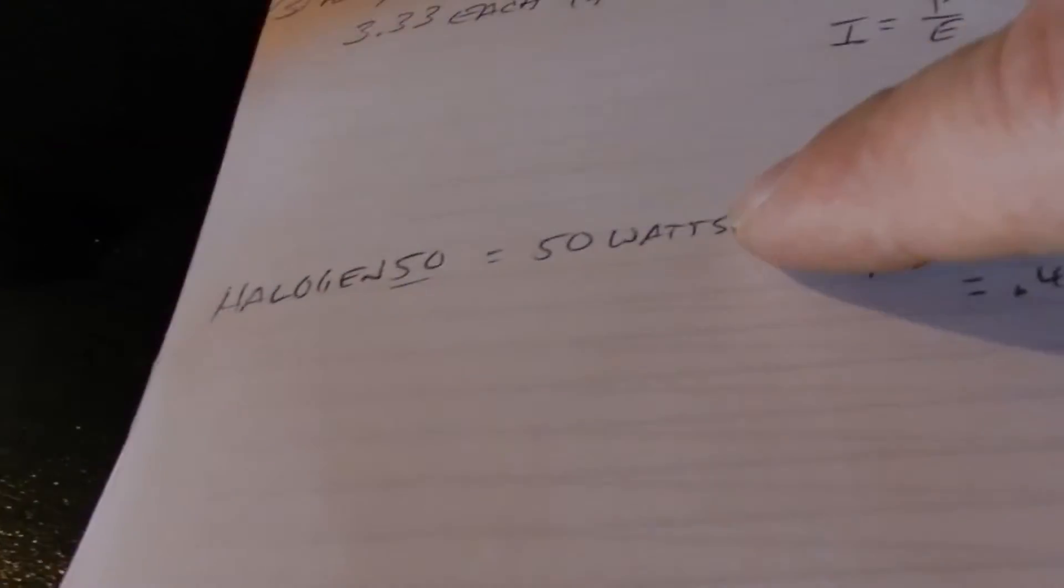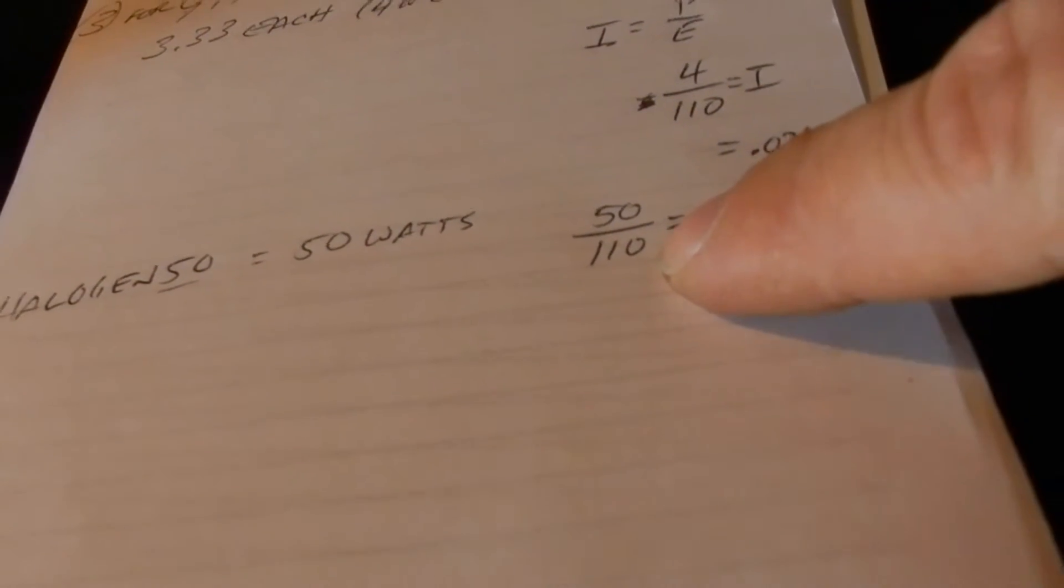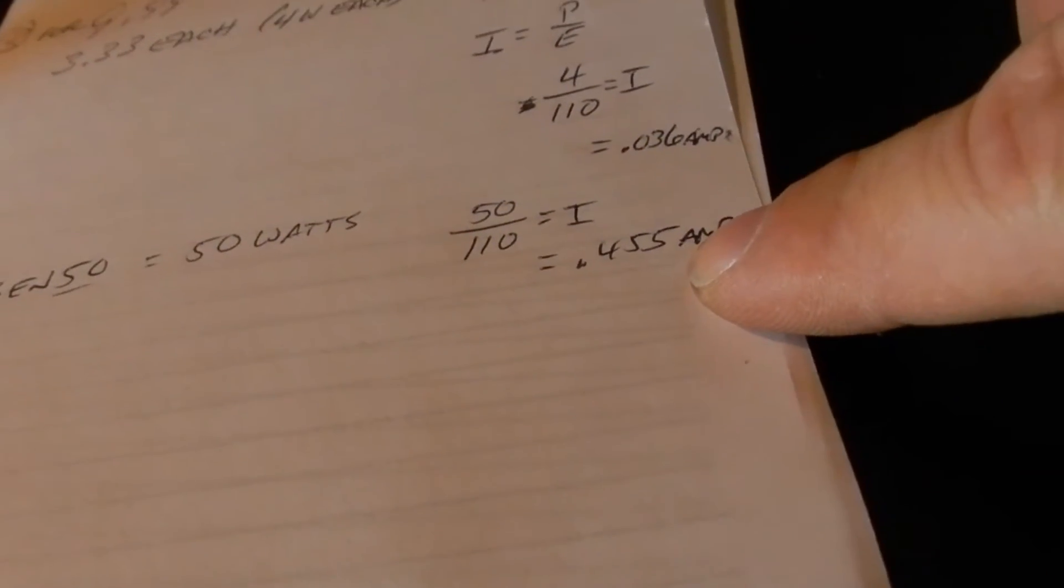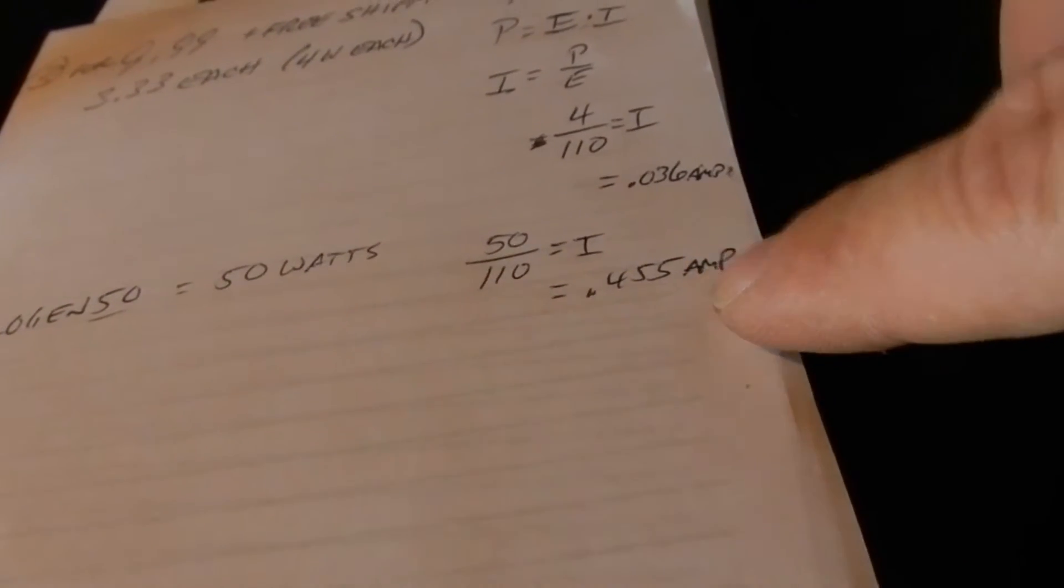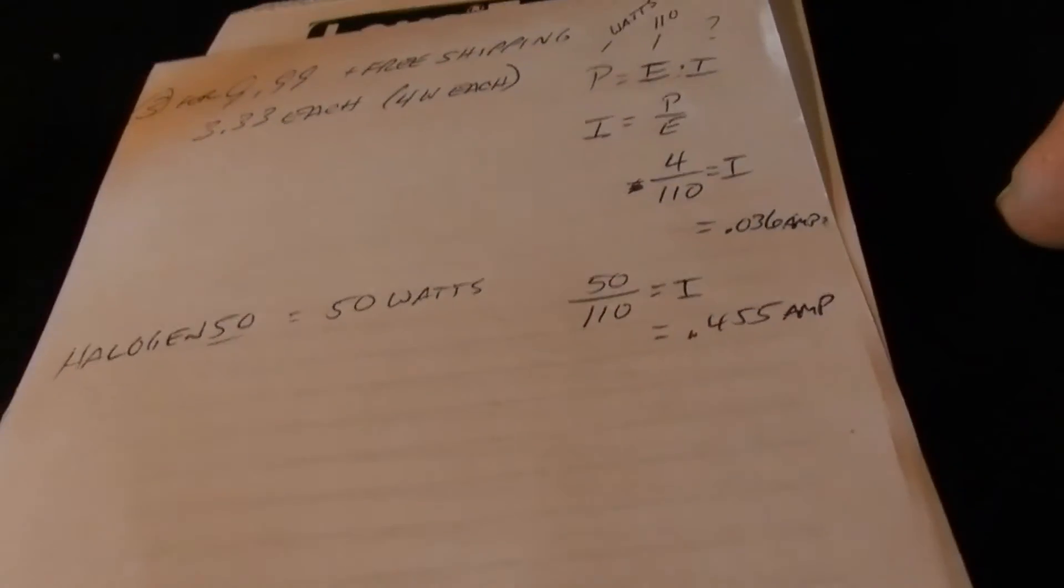The halogen bulbs, this guy right here, when it's on full blast is 50 watts. 50 divided by 110 equal amps is .455 amps, times that by 3 and that's why it gets so hot.